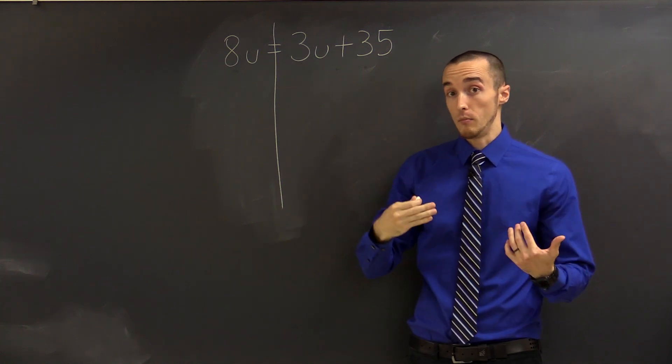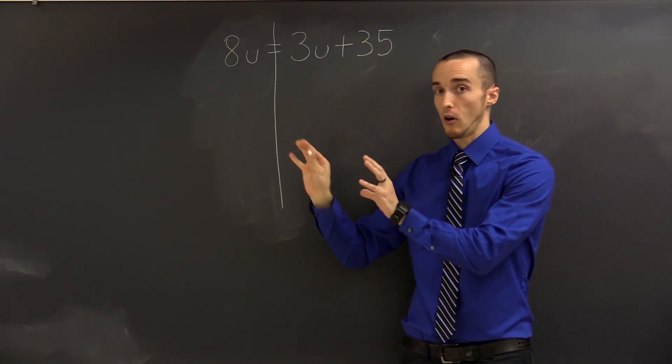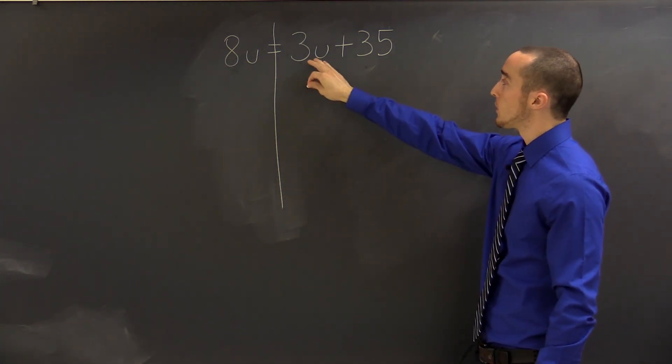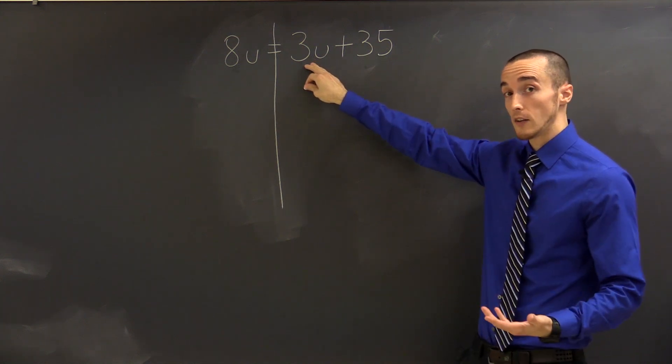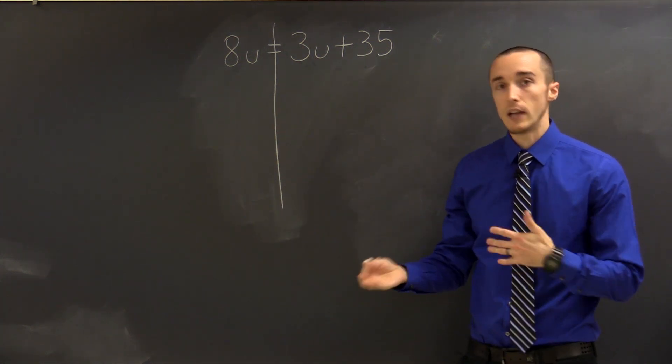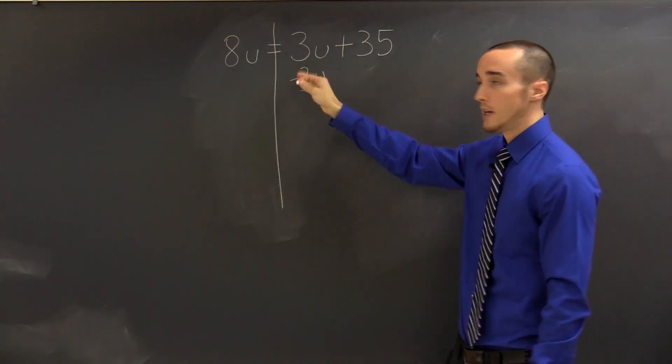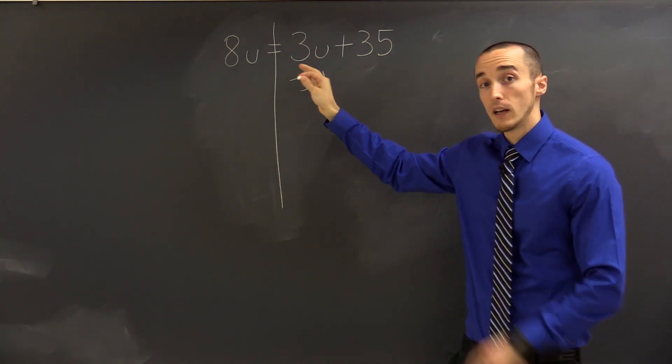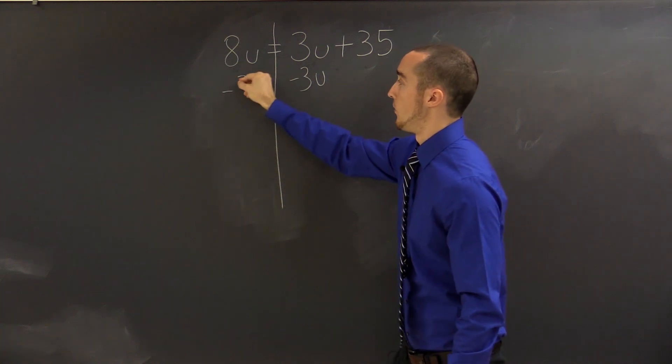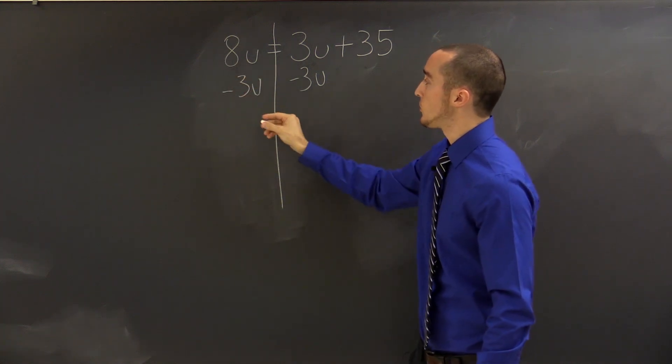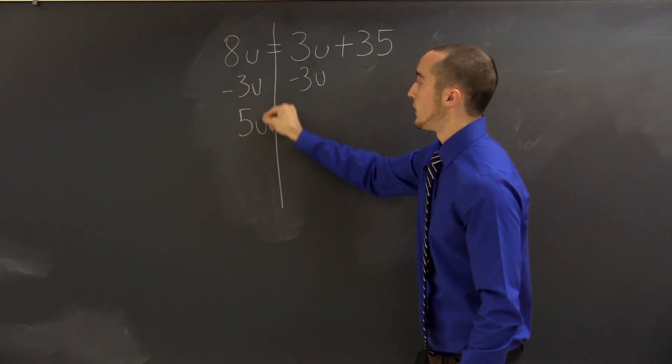That means I want to get rid of the variables on the right-hand side so that they'll all be on the left. So if I'm getting rid of terms with variables on the right, that's 3u, and I can get rid of that using inverse operations. So I'm going to subtract 3u as my first step to get rid of the variables on the right. Now, of course, I also have to do that on the left. 8u subtract 3u is 5u.